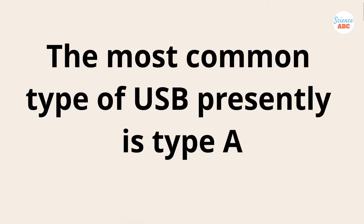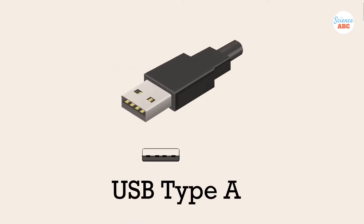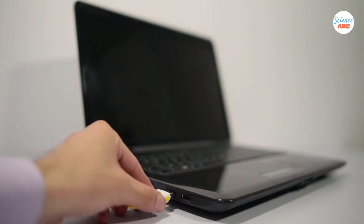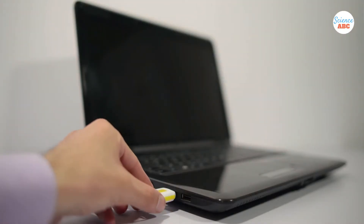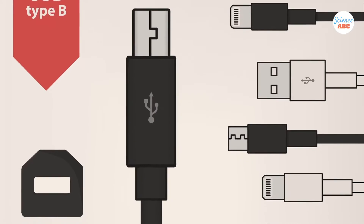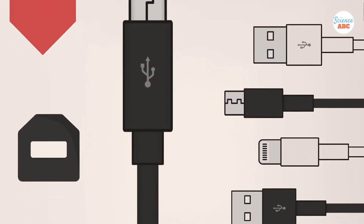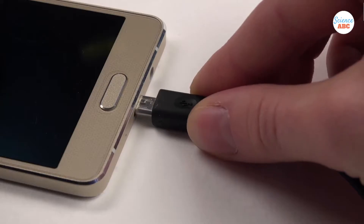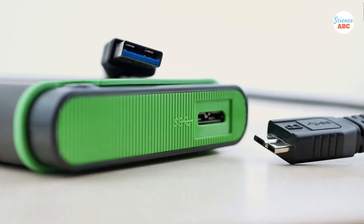The most popular type of USB port is Type A, which you can see at one end of the USB cable — the end that typically goes inside the side of the computer. At the other end, a Type B connector plugs into a peripheral device, such as a smartphone, a printer, or a hard drive.